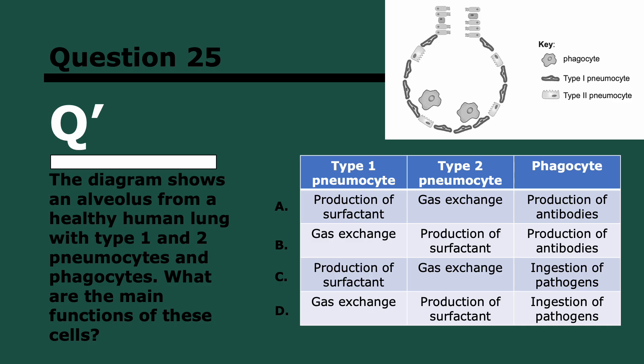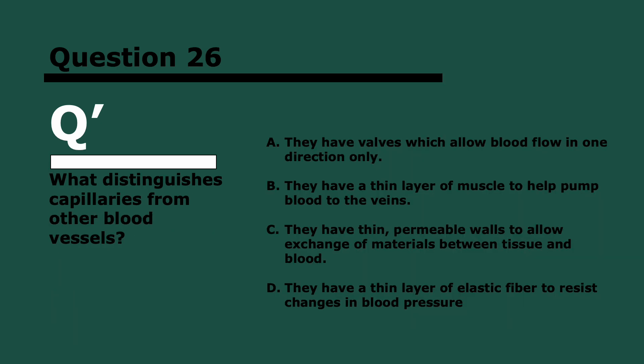Question 25. Which is true of type 1, type 2 pneumocytes, and phagocytes? Three, two, and one. Type 1 pneumocytes, they do gas exchange, so they line most of the alveolus. Type 2 pneumocytes are more sparsely found and they produce surfactant. Remember, that helps the alveoli not collapse onto themselves because of the pressure changes. Phagocytes ingest pathogens, that's from the immune system, and they're found in most tissues.